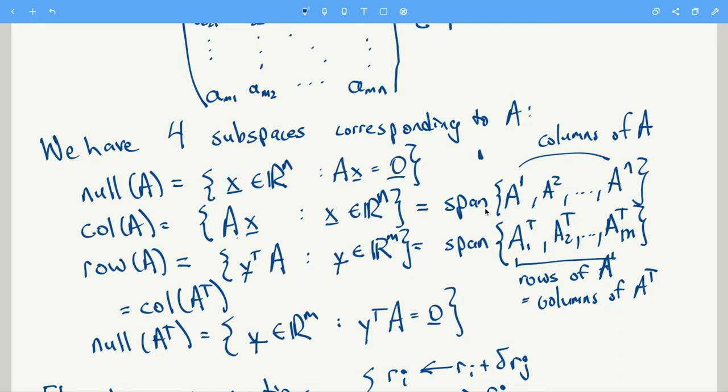Another way to write the column space is as the span of the columns of A. So these AIs are the columns of A.